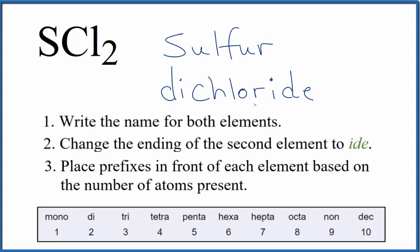If you were given the name here and asked to write the formula, you know you have one sulfur, and the di means you have two chlorine atoms.